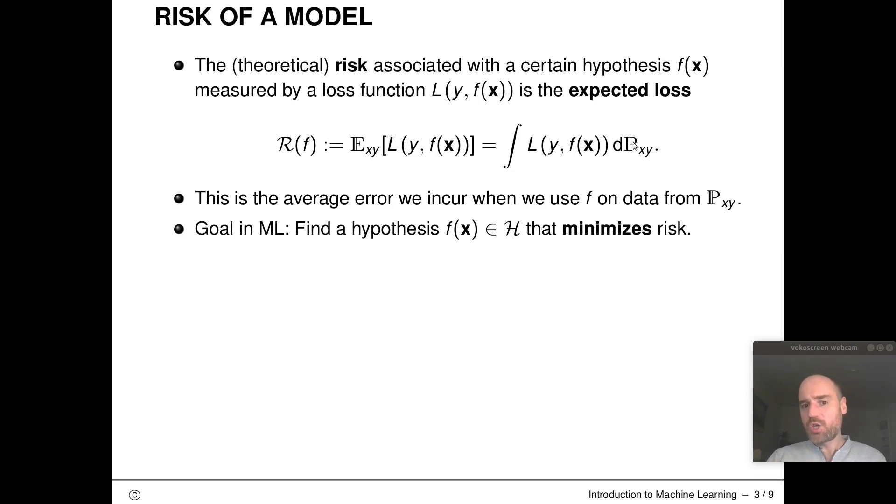So this is just the average error we incur if we use a certain given f on training data sampled from capital P. And now the natural goal in machine learning is to find a hypothesis that minimizes this risk because that hypothesis will minimize expected loss. That seems to be a smart and appropriate thing to do.